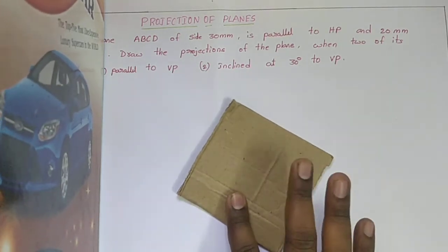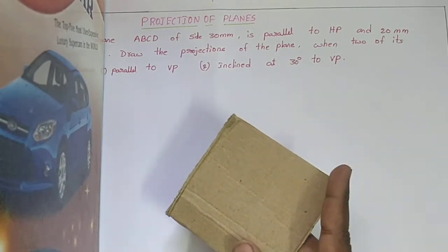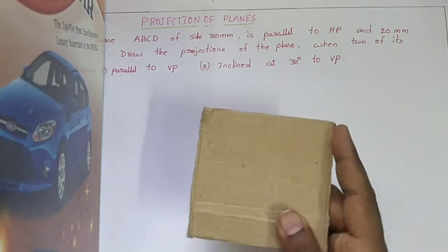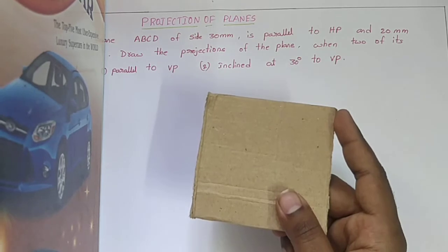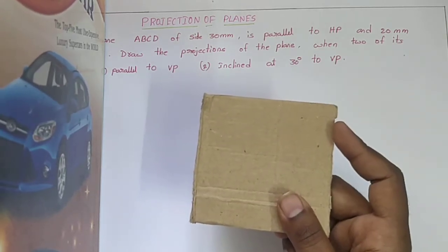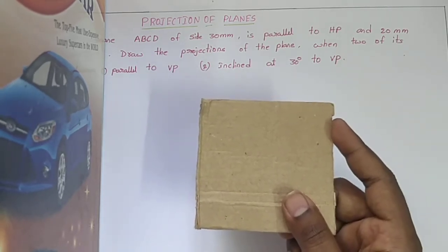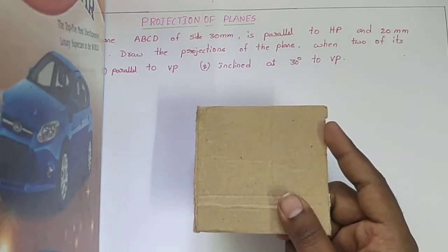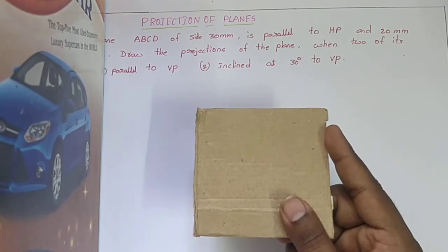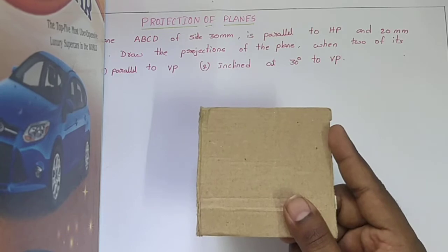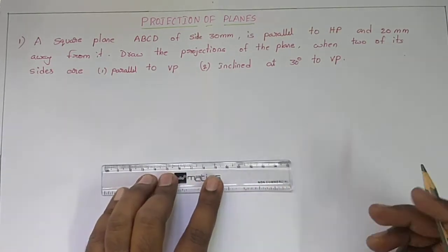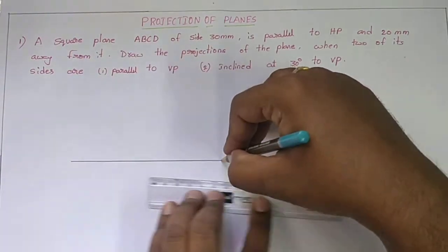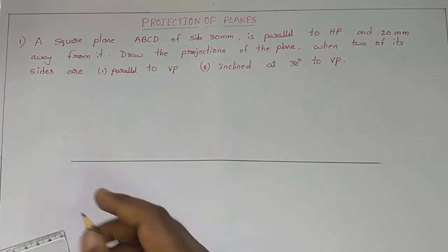We have to provide the front view and top view for each condition. For the first condition, viewing from the top side, the plane surface gives us all four dimensions — four sides — in the top view. Viewing from the front side, this position falls on the vertical plane as a straight line 20 mm above the HP. Since the distance in front is not given, we can assume any value. First we need to draw a reference line, which is the intersection of the horizontal plane and vertical plane.